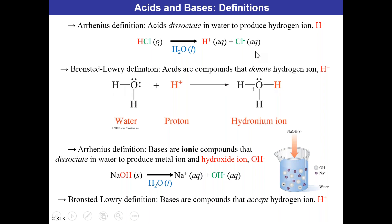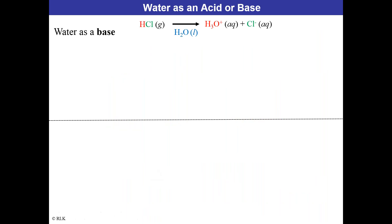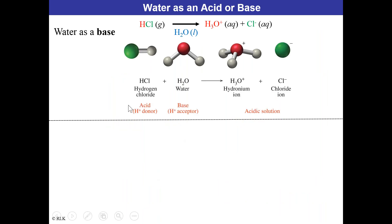The Brønsted-Lowry definition of a base describes compounds that accept the hydrogen cation. If a compound donates H+ it's an acid; if it accepts H+ it's a base. For example, the water molecule is the base that leads to the hydronium ion because water accepts that proton. Regarding water as an acid or base: with hydrogen chloride and water, a hydronium ion and chloride ion are created. We typically just write H+ rather than H3O+.